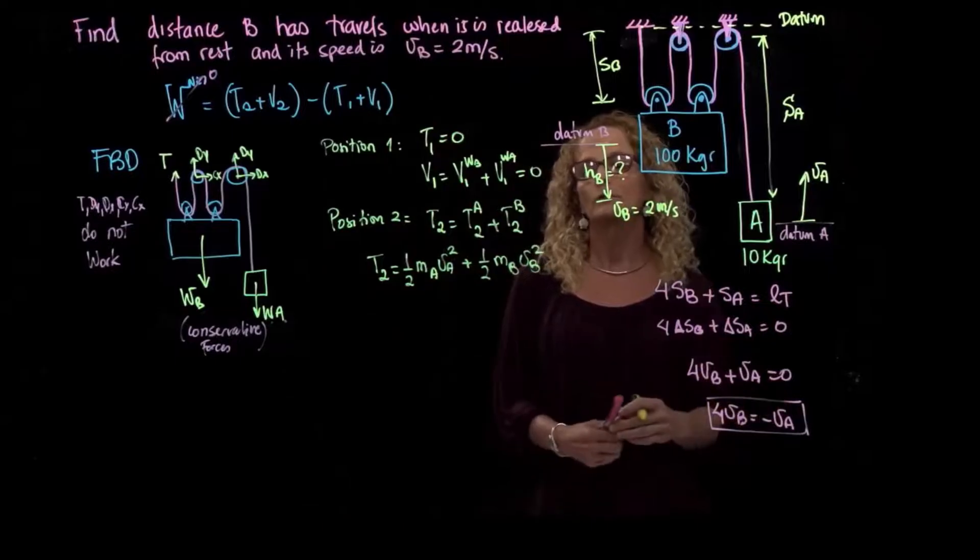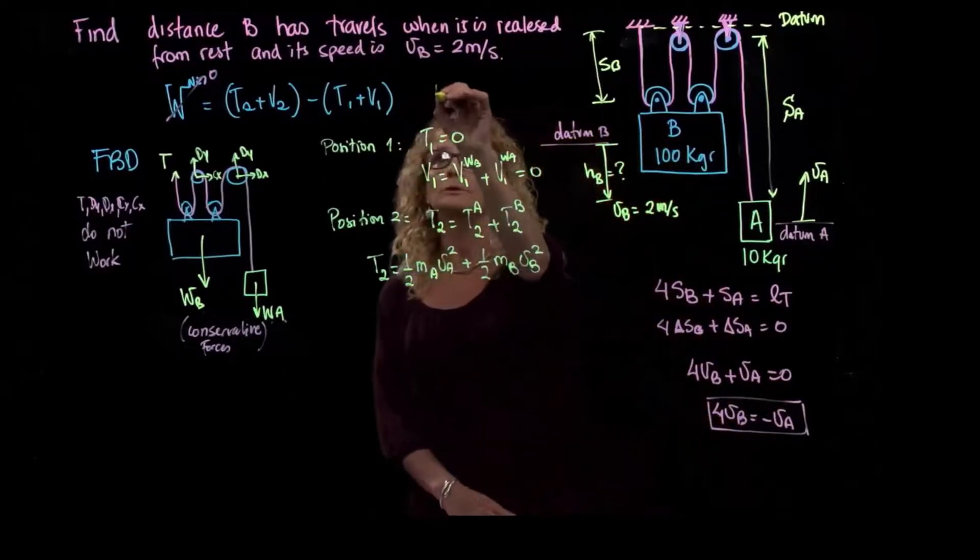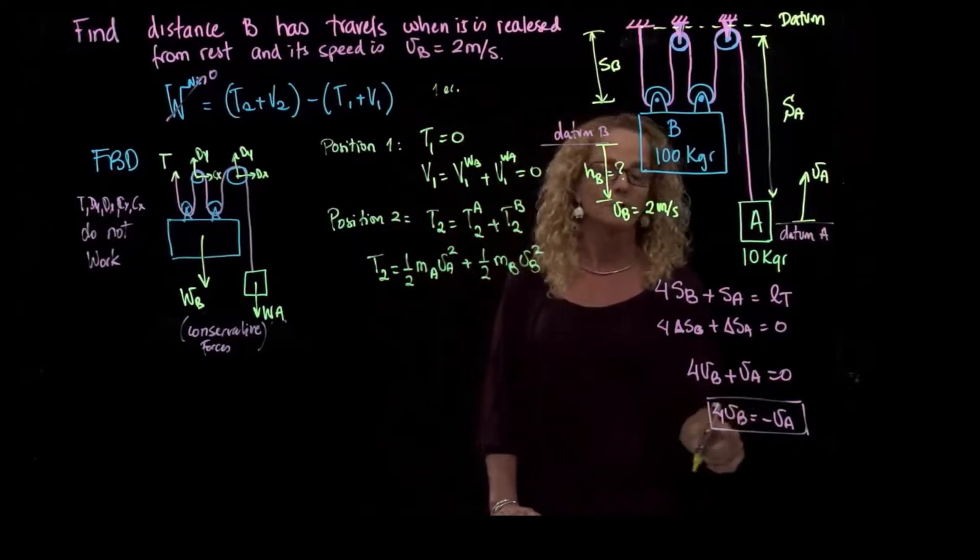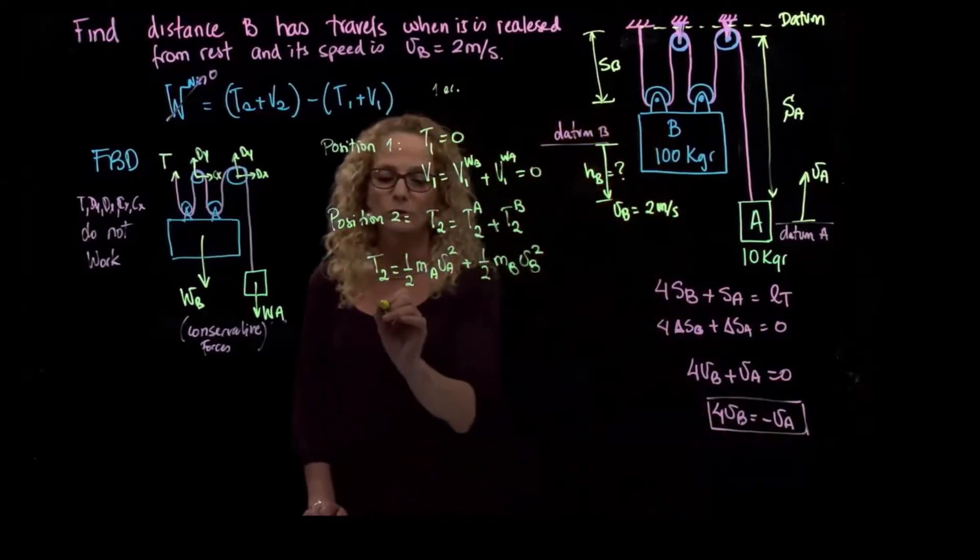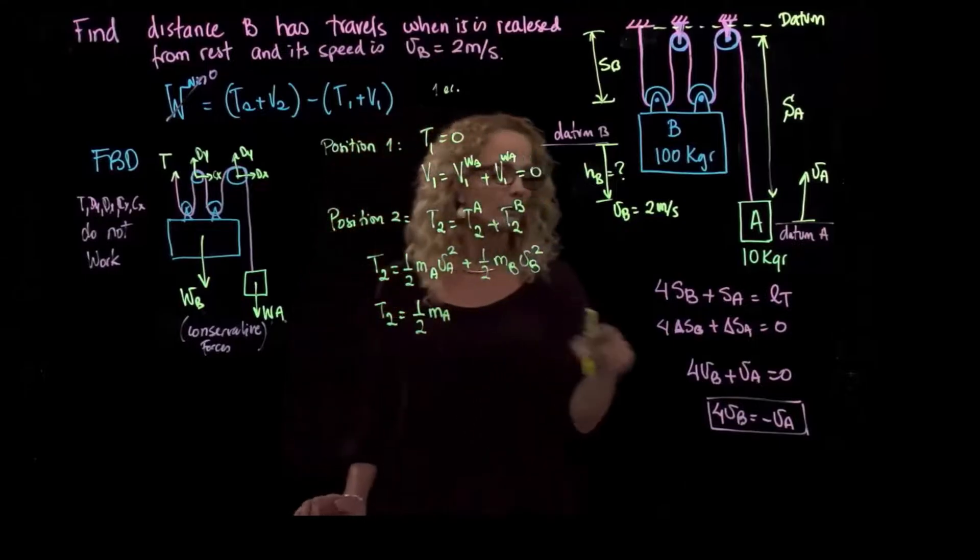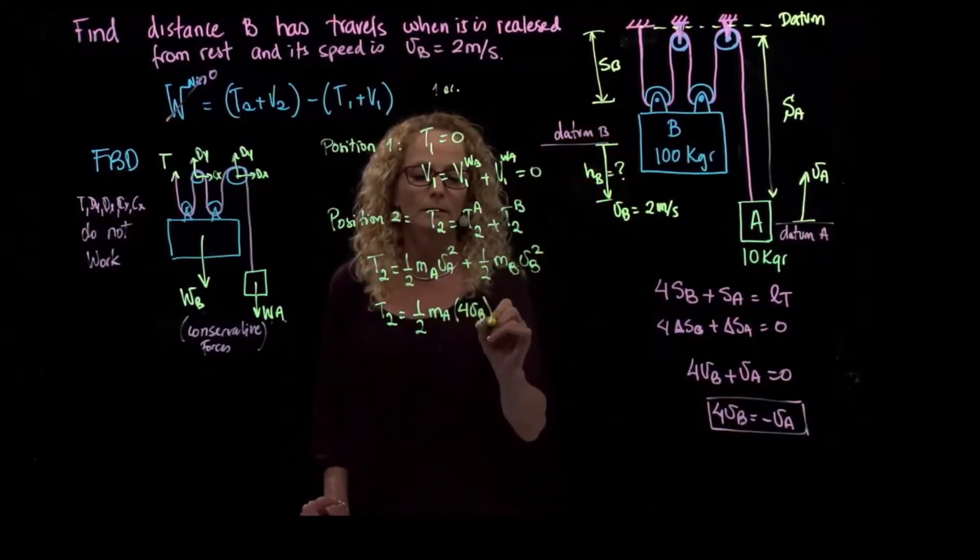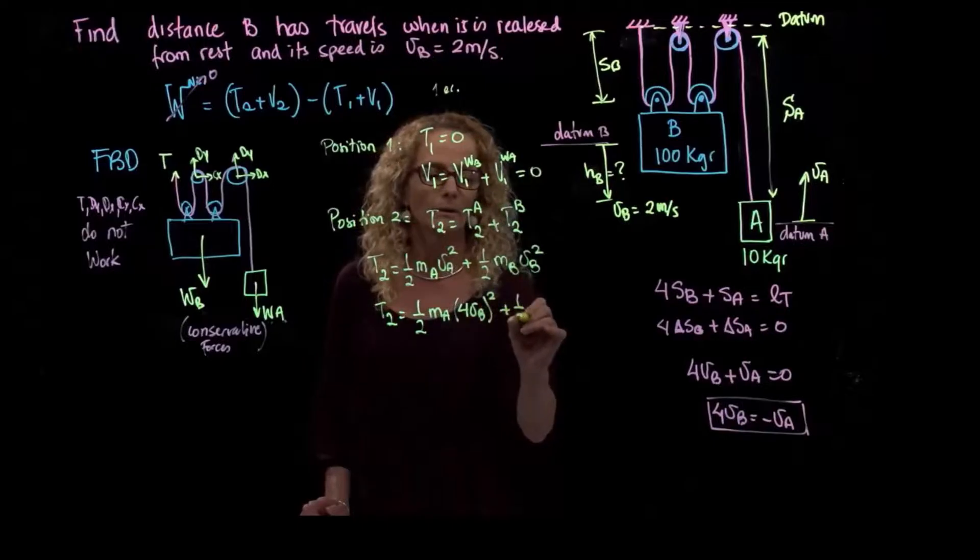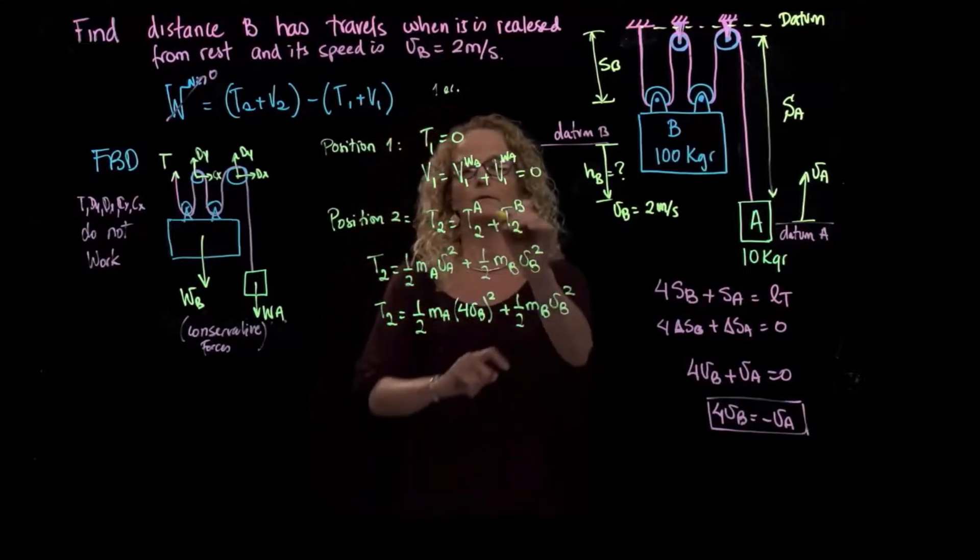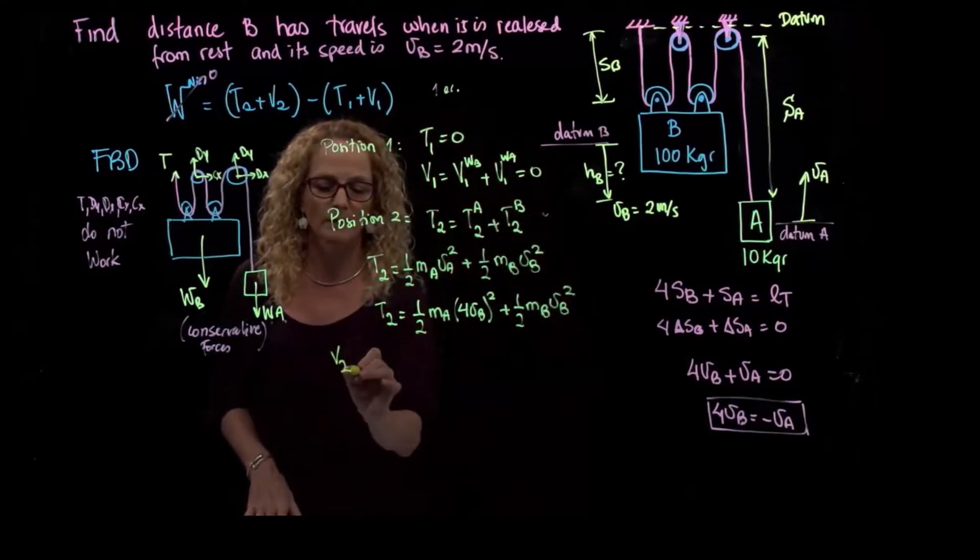So it will be one-half mass of block A times velocity of A squared, plus one-half mass of B times velocity of B squared. And we could relate those velocities. We have already a relationship right here, and we should relate them because otherwise we would have only one equation. This represents only one equation, and we have to have only one unknown. Here we have two unknowns, but they are related with a kinematic expression. So T2 will be equal to one-half mass A times 16 times the velocity of B squared plus one-half mass B times velocity of B squared.